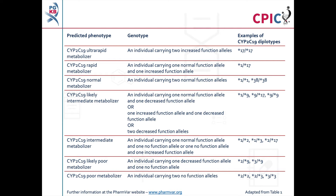Diplotypes of CYP2C19 star alleles can be assigned to a metabolizer phenotype, as shown in this table and in table 1 of the guideline. Note that as more evidence becomes available, new star alleles can be added and the functional definition of some star alleles may change. An important caveat for all genotyping tests is that any alleles which are not detected in the assay are designated as star 1.